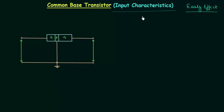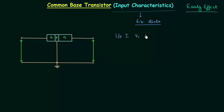The input characteristics is simply the characteristics of a forward biased diode. It is the graphical relation between the input current and the input voltage for different values of output voltage. This is what we have in input characteristics of common base transistor.